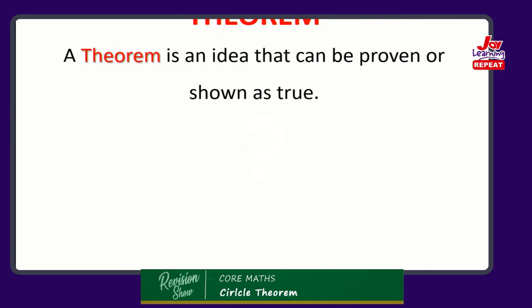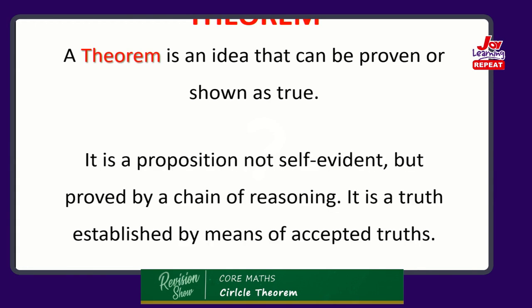What is a theorem? A theorem is simply an idea that can be proven or shown as true. It is a proposition which is not self-evident but can be proved by a chain of reasoning. Note this because when we begin to solve problems, you would have to have a chain of reasoning. It is a truth established by means of other accepted truths. In our circle theorem class today, we are going to be using propositions and truths to prove other truths.